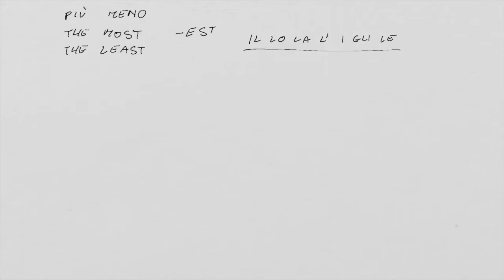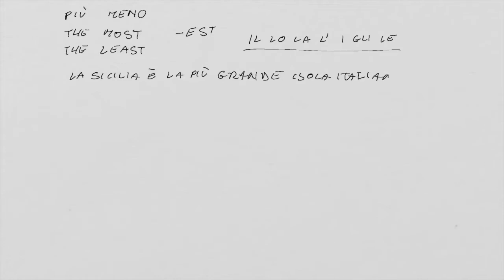Sicily is the biggest Italian island. La Sicilia è la più grande isola italiana. 'The biggest' is la più grande. You use 'la' because Sicilia is feminine and the word that follows 'la' starts with a consonant — più.